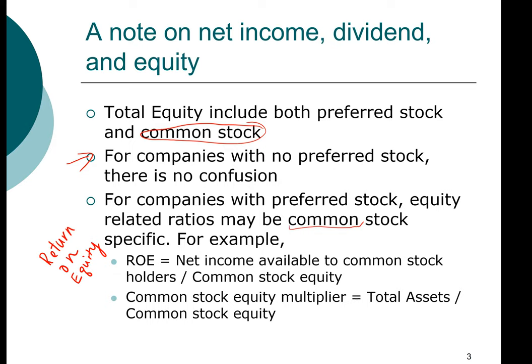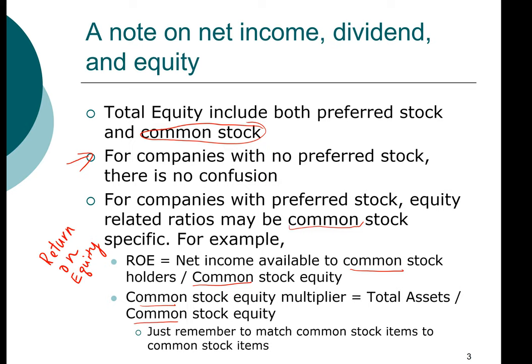The same is true — we'll introduce this ratio in a minute — it's called the common stock equity multiplier. You take total assets divided by common stock equity. The important thing here is that we match apples to apples and oranges to oranges. If we are talking about common stock, we need common stock in both the numerator and the denominator. Even if you end up choosing a company that has preferred stock, you do the analysis the same way. Just make sure that you're picking the item that is common stock specific.